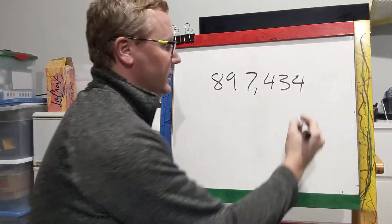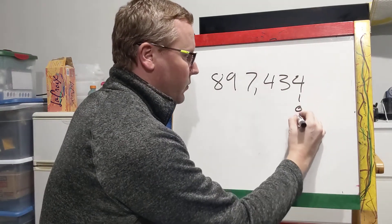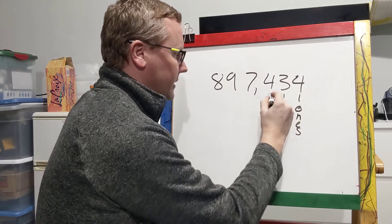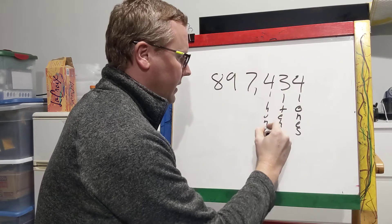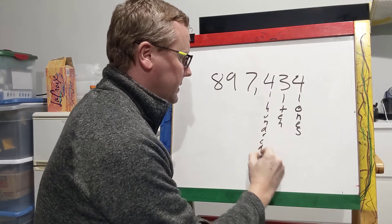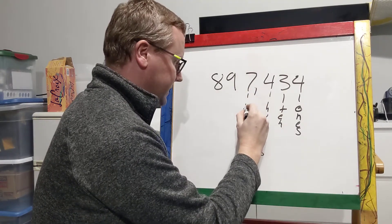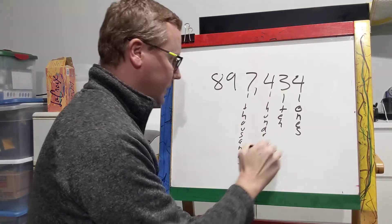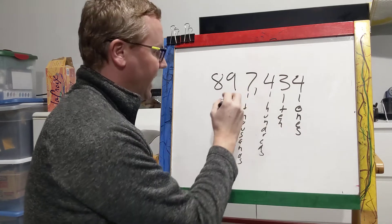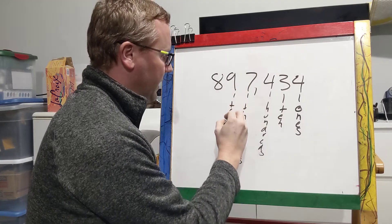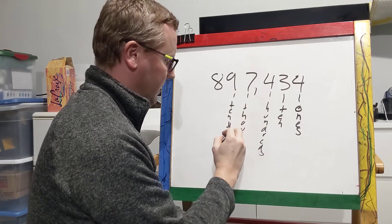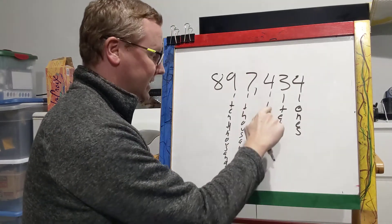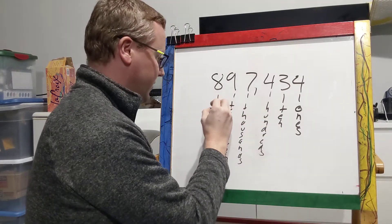These all have place values, right? So this value right here is ones. This one is tens. Hundreds. This is thousands. Remember that pattern. Ten thousands. And lastly, hundred thousands.